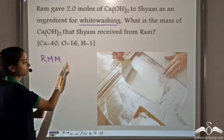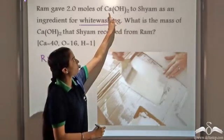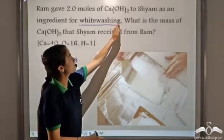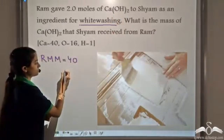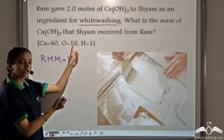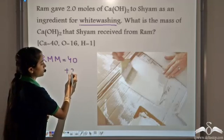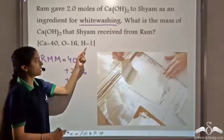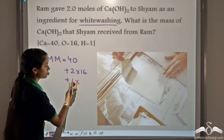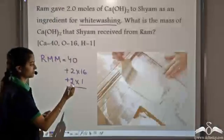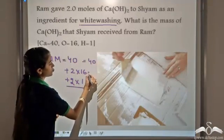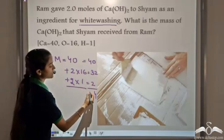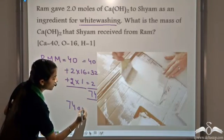We are given the relative atomic masses of each of the elements. Calcium hydroxide contains 1 atom of calcium, which has relative atomic mass 40. It contains 2 atoms of oxygen, each with relative atomic mass 16, giving 2 x 16 = 32. There are also 2 atoms of hydrogen, each with relative atomic mass 1, giving 2 x 1 = 2. So the relative molecular mass is 40 + 32 + 2 = 74.